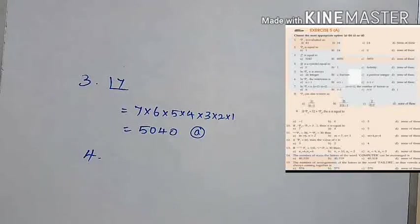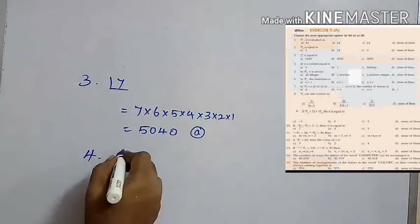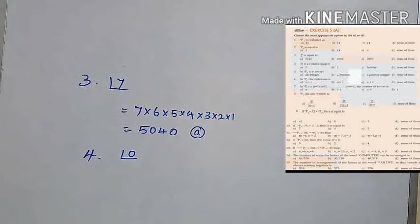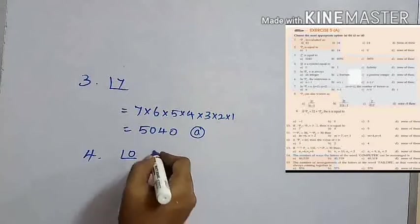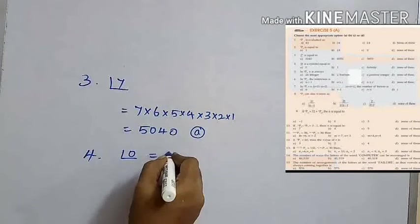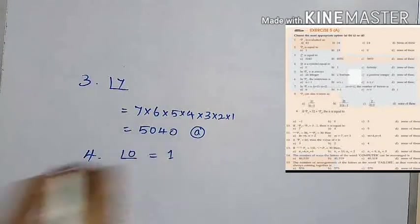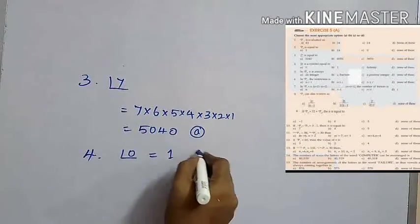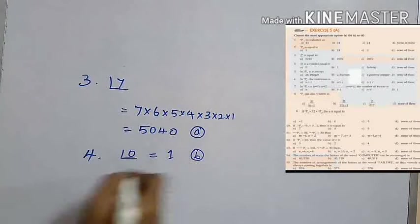In the fourth question: 0 factorial is equal to. The answer is 1. Option B is the answer.